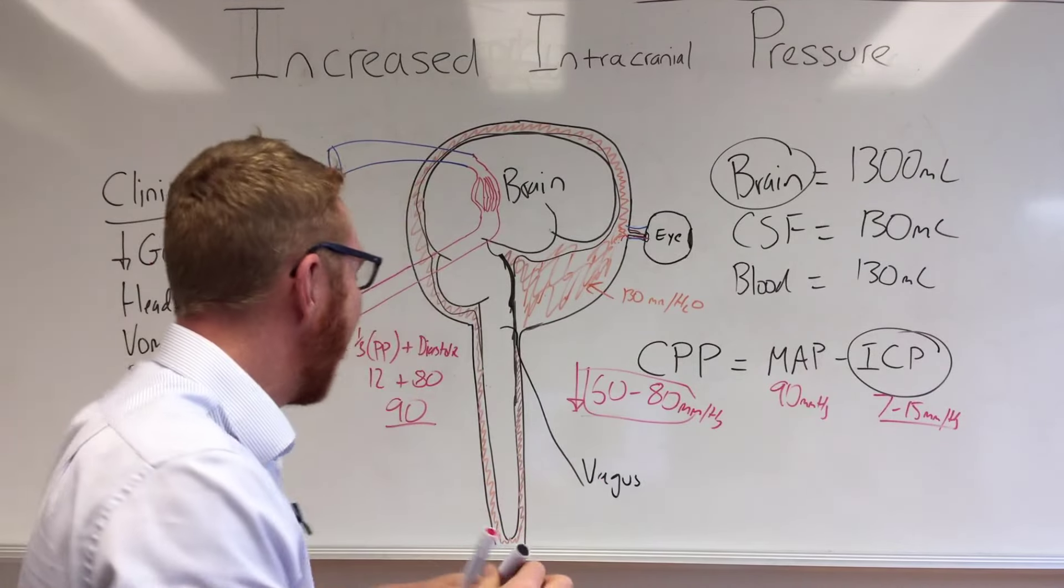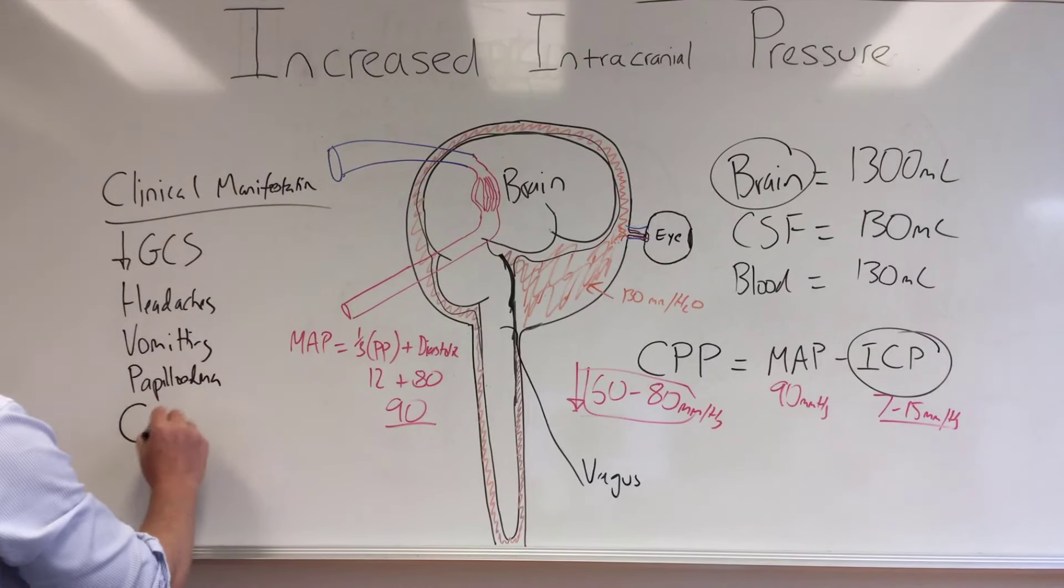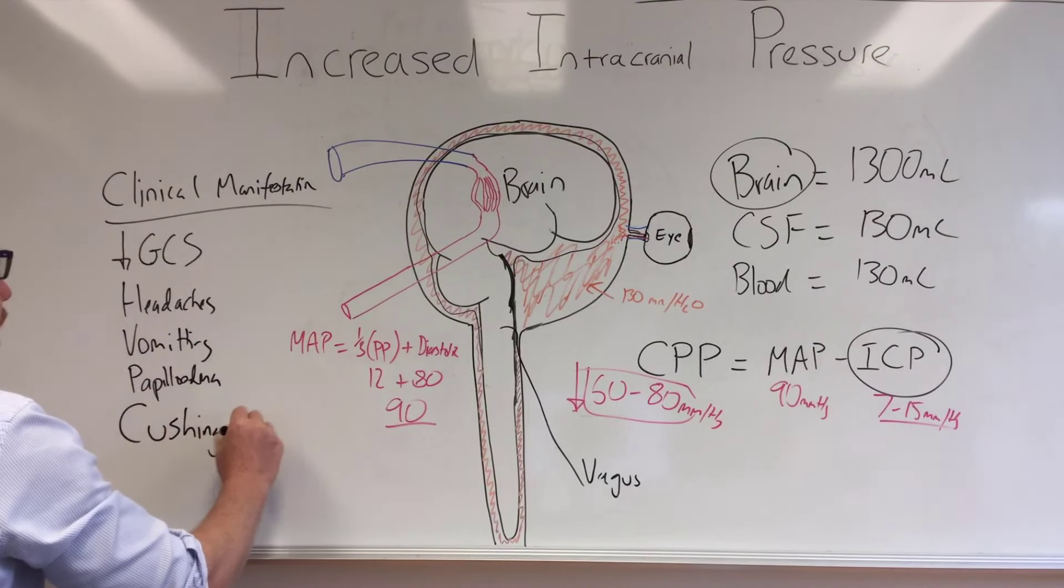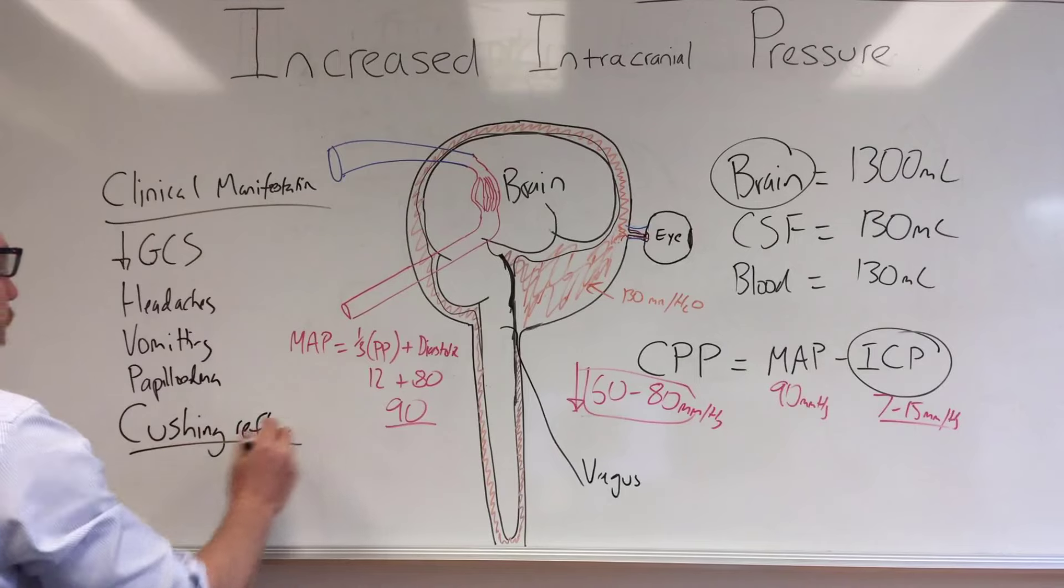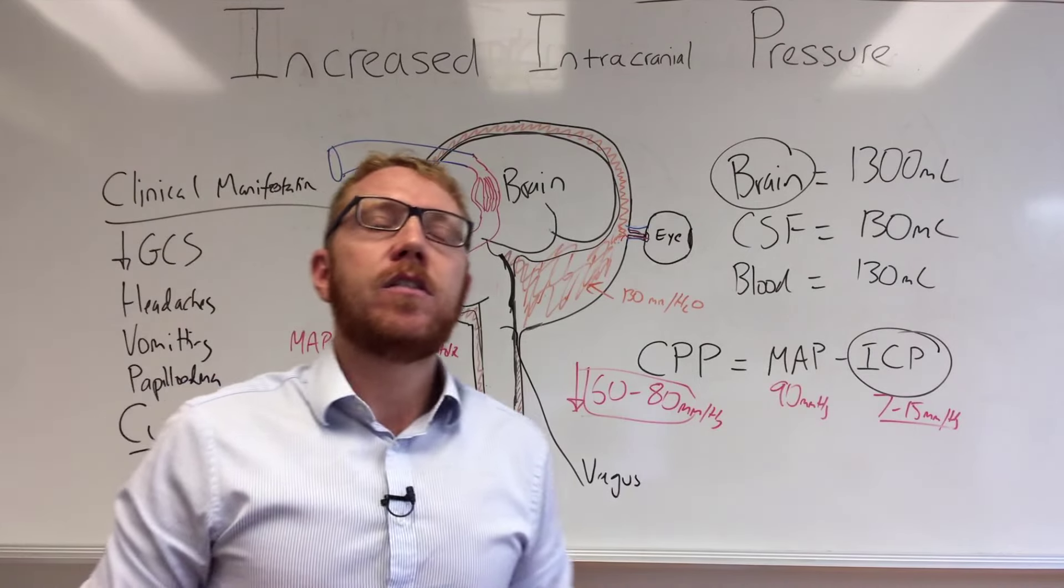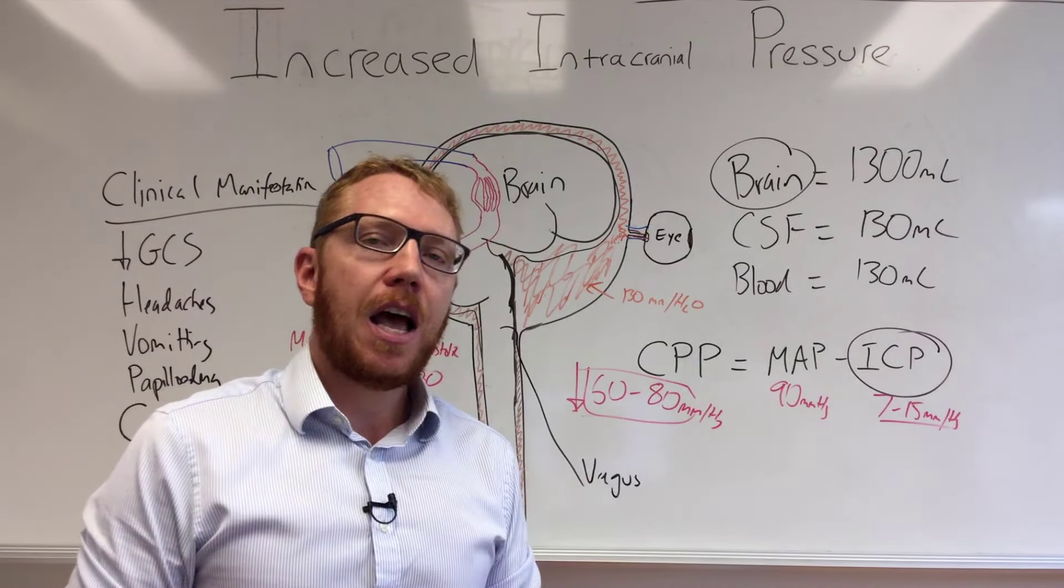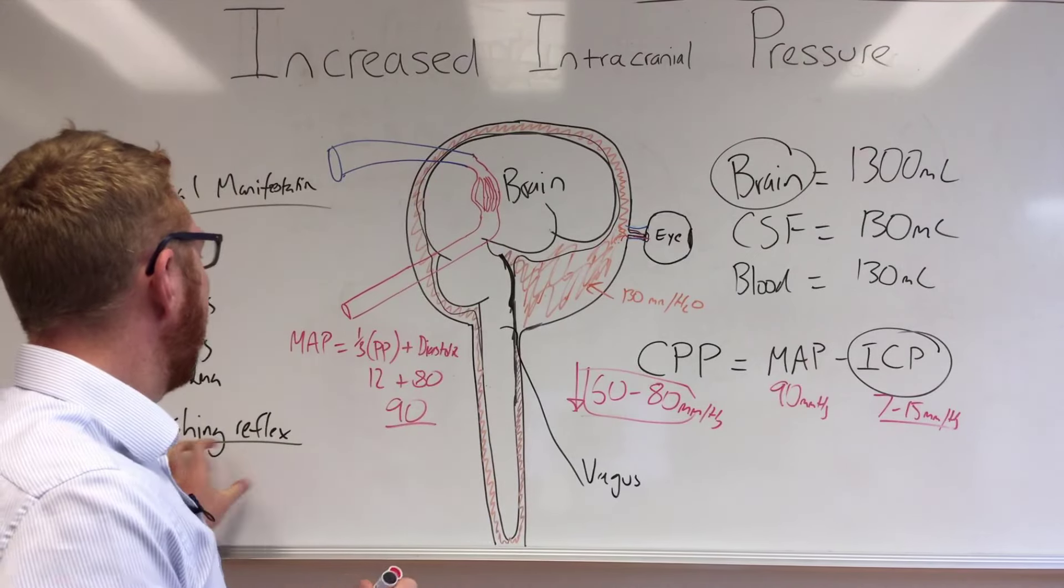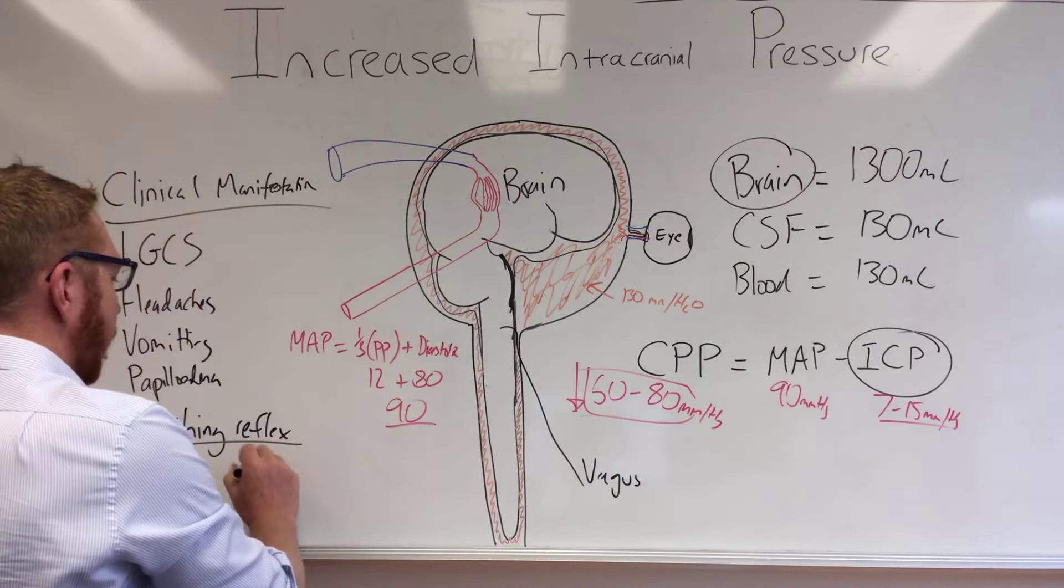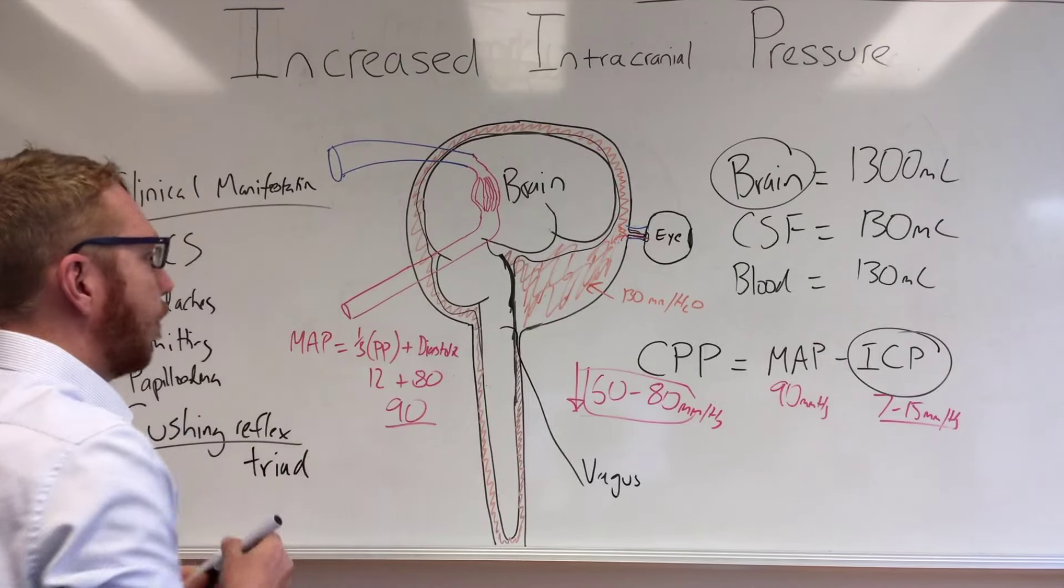We're left now with what we call the Cushing reflex. This is probably one of the most important ones to get your head around. This is named after the physician Harvey Cushing. Sometimes it's also called the triad because there's three components to it.